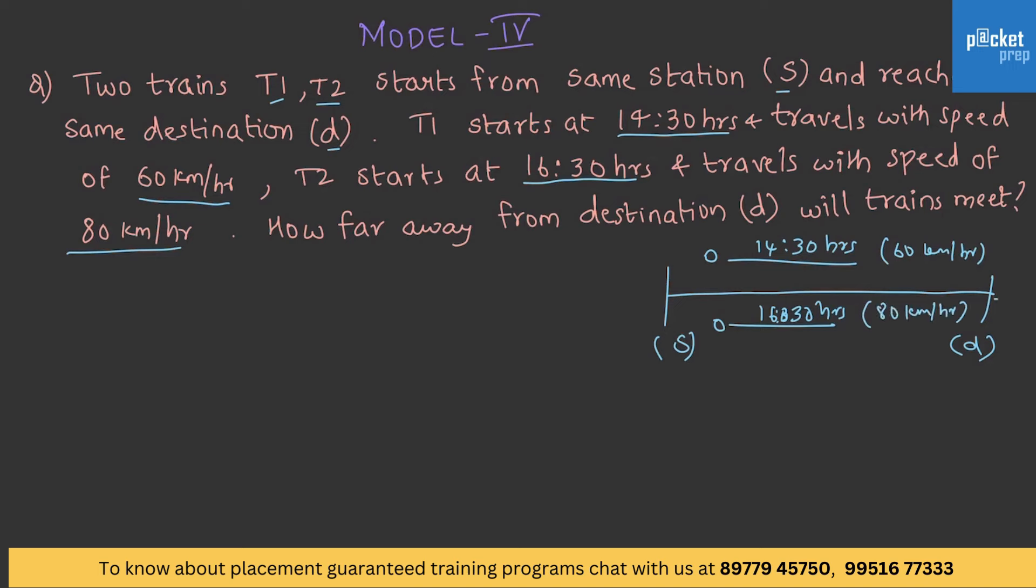So, let's solve this. Let us assume that they meet after 1430 hours. Then, it is going to be 60 into x is equal to 80 into x minus 2.